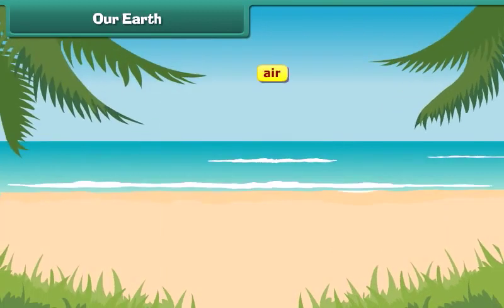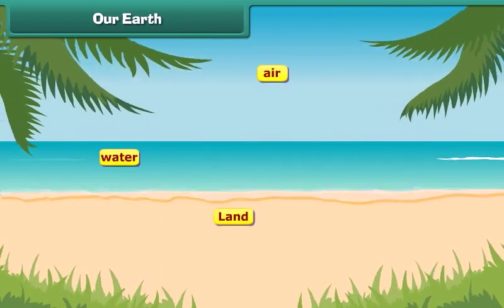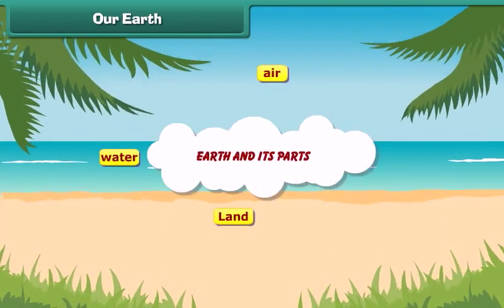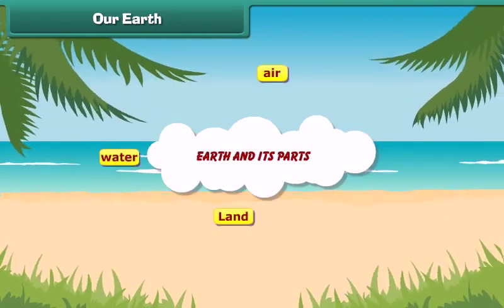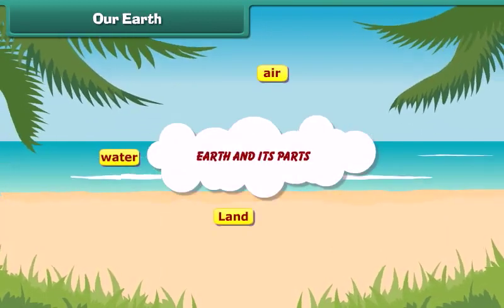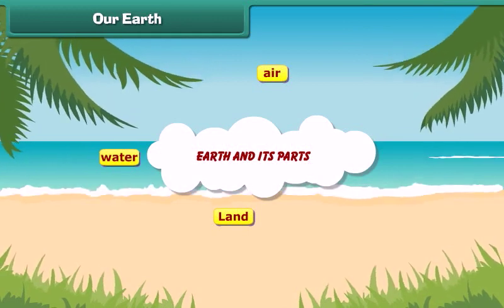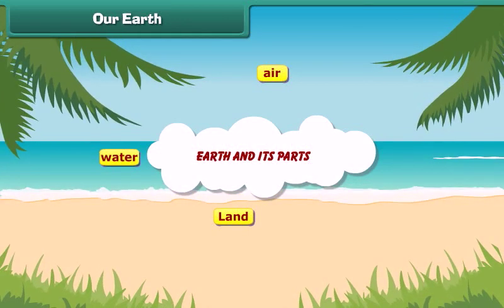Air, water and land are three major parts of our Earth. Now let's learn about these parts of Earth in detail.